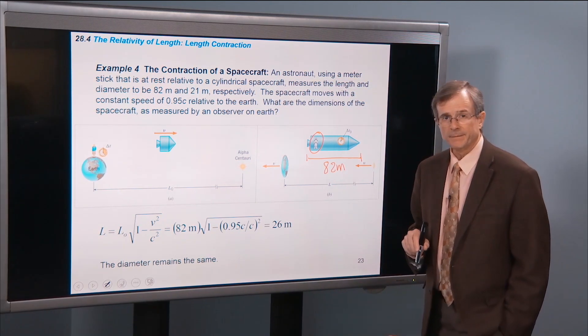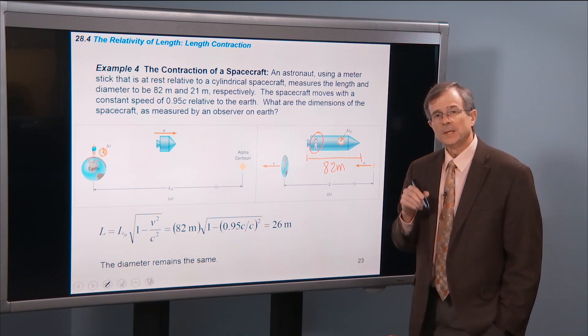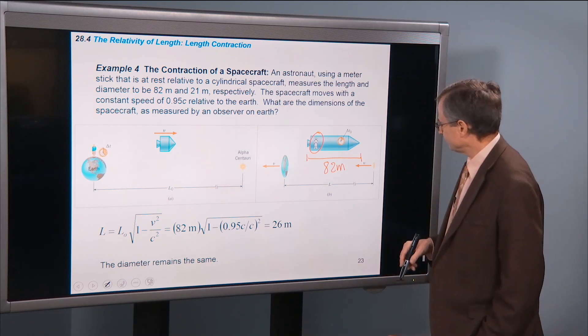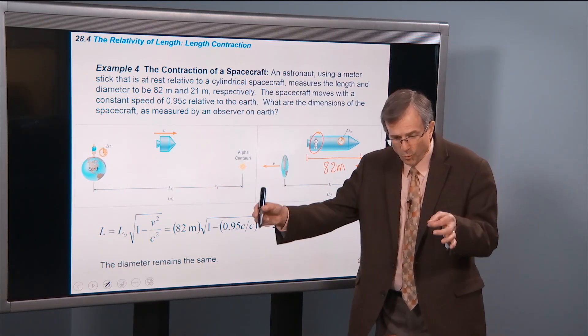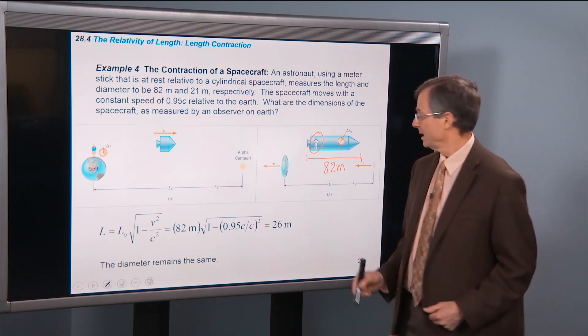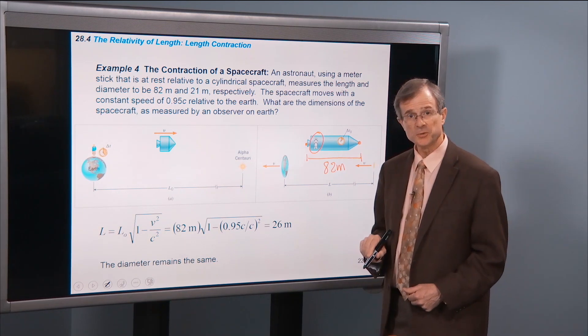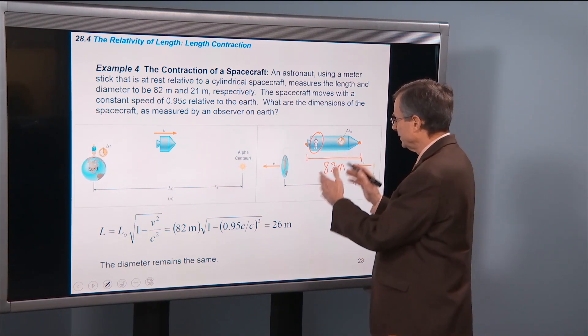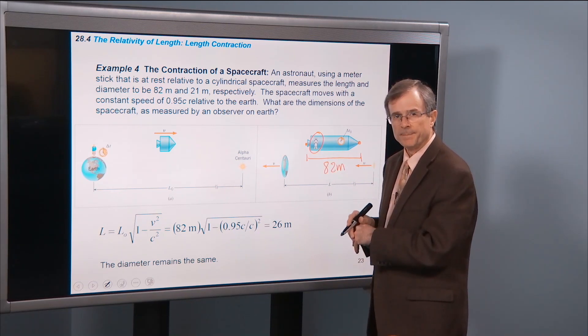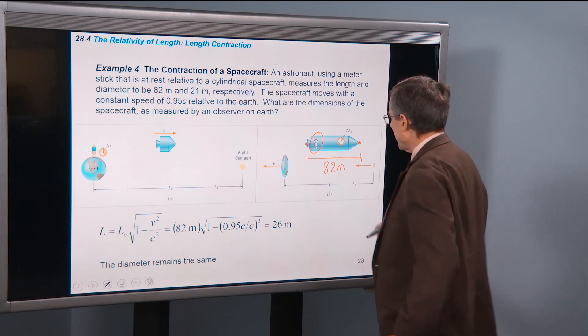Is that the proper length? Okay. So what's proper length? The proper length is measured by an observer for which the two points, who is at rest with respect to the two points. Is that astronaut at rest with respect to these two points? Yeah, he sure is. He's moving along. From his point of view, these two points are stationary. They're on the same rocket that he's traveling with. Perfect. So that is the proper length.